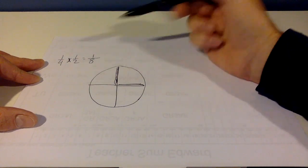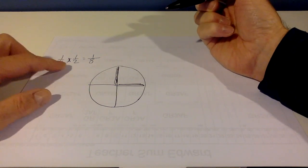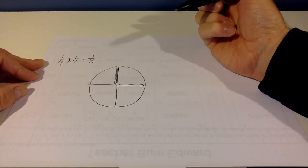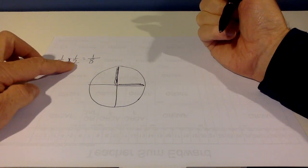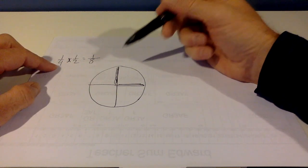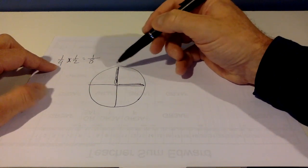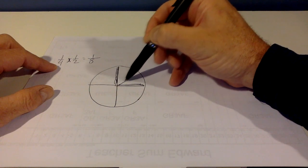And you're multiplying it by 1/2. Another way of thinking of multiplication is 1/4 of 1/2, or in this case, 1/2 of 1/4. So we're going to take that 1/4 and cut it into 2.